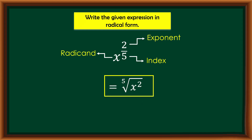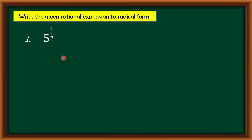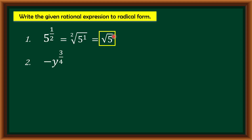Let us have more examples. Number 1: we have 5 raised to 1 over 2. The numerator 1 will be the exponent of the radicand and 2 will become the index. So we have the square root of 5 raised to 1 — therefore the radical form is the square root of 5. There is no need to write the index 2 or the exponent 1. Number 2: we have negative y raised to 3 over 4. The exponent 3 over 4 is only for the base y, excluding the negative sign. Therefore the answer is negative fourth root of y cubed, where 3 becomes the exponent of y and 4 becomes the index.